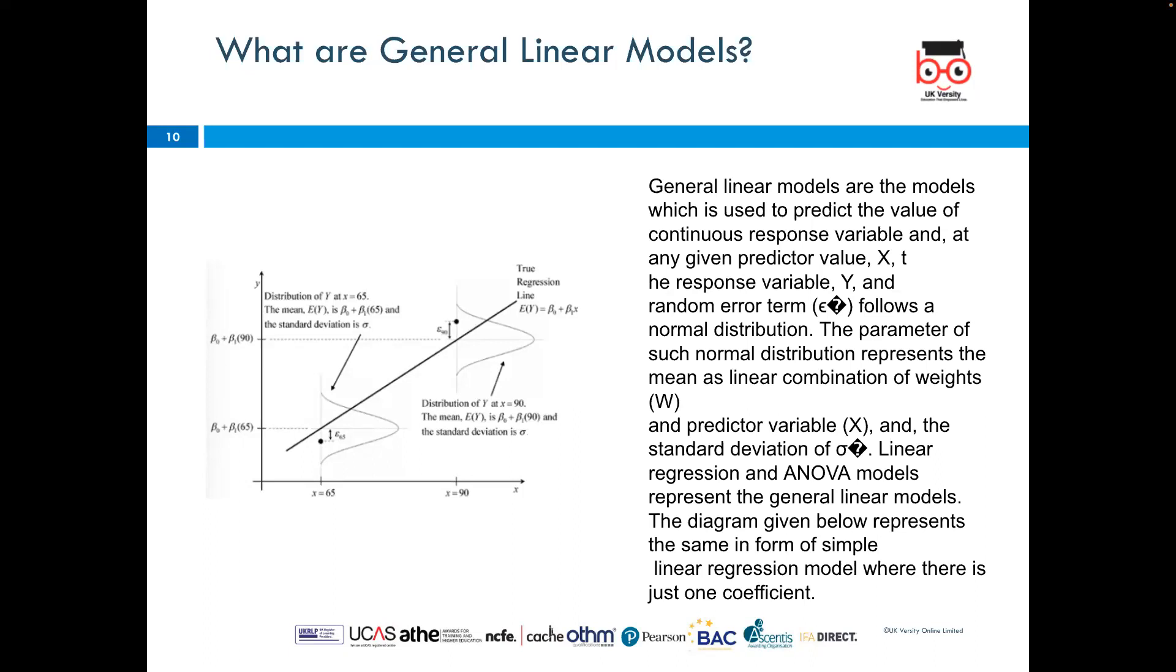The parameters of such normal distribution represent the mean as linear combination of weights W and predictor variable X and the standard deviation. Linear regression and ANOVA models represent the general linear models. The diagram given below represents the same in form of simple linear regression model where there's just one coefficient.